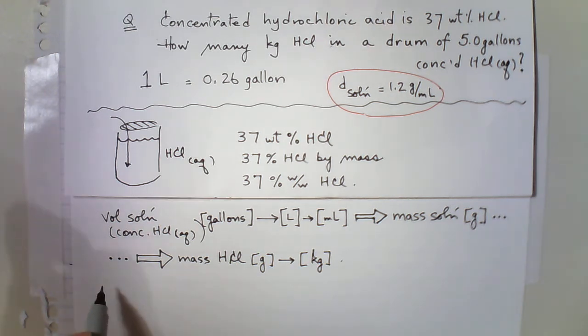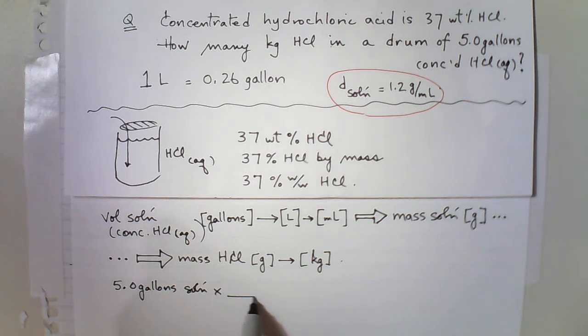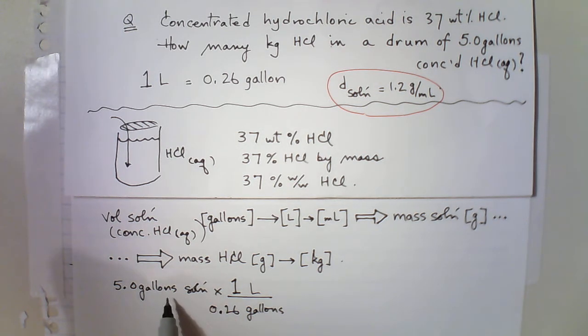So let's begin. We have 5.0 gallons of solution. And I need to convert from gallons of solution to liters of solution. And the conversion factor I'm given is that 1 liter is equal to 0.26 gallons. So now I have the volume of solution in liters, and now I want to just convert liter to mL. And I know 1,000 mLs is 1 liter. Okay. That is my volume of solution in milliliters.